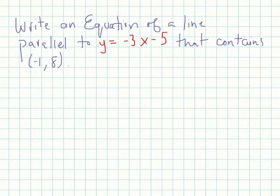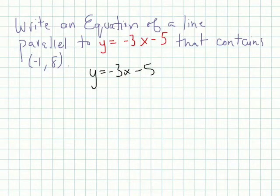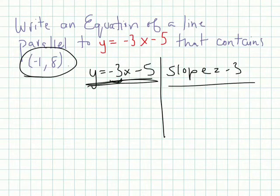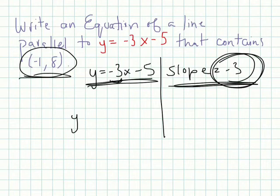Write an equation of a line parallel to y equals negative 3x minus 5 that contains the point negative 1, 8. So, y equals negative 3x minus 5 is in slope-intercept form. We know the slope is negative 3. We need to write a line parallel to this, which means it must have the same slope of negative 3, and it needs to pass through the point negative 1, 8. Since we're passing through a point, we need to use point-slope form.